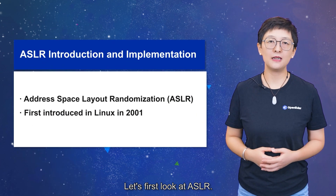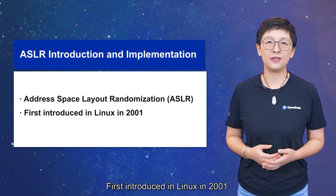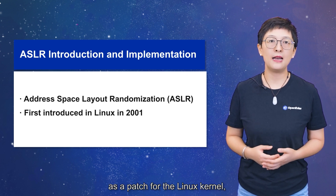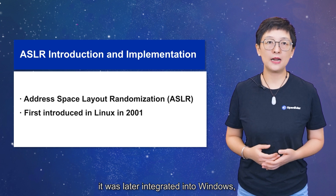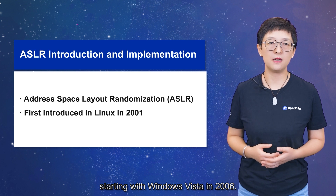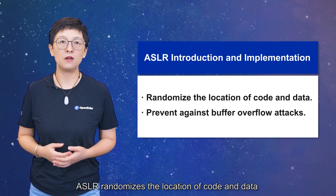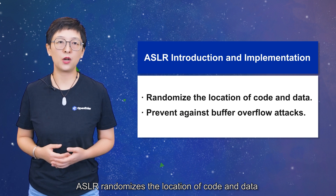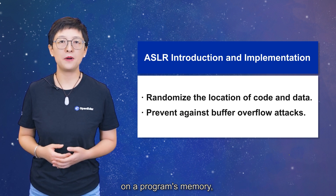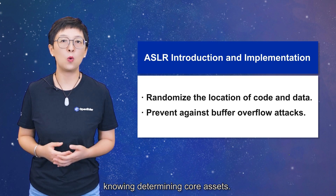Let's first look at ASLR, first introduced in Linux in 2001 as a patch for the Linux kernel. It was later integrated into Windows, starting with Windows Vista in 2006. ASLR randomizes the location of code and data on a program's memory to prevent an attacker from knowing or determining core assets.